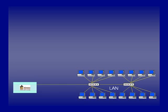In its typical configuration, the eGranary Digital Library is hooked up to a local area network, giving everyone on the local area network incredibly fast access to these millions of documents. There are children in schools in Africa with no internet connection who use the eGranary and open documents five times faster than students at major universities in the United States. It's very fast and very effective.